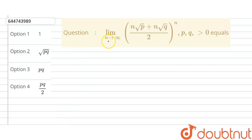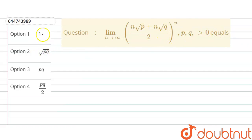The question says: limit n tends to infinity of the function nth root of p plus nth root of q, divided by 2, this whole function raised to the power n, where p and q are greater than 0. We need to find the value of this limit. The four options given are: 1, root pq, pq, and pq by 2.